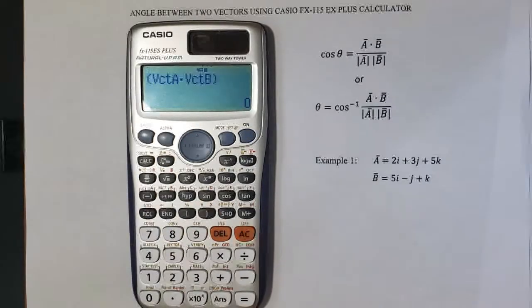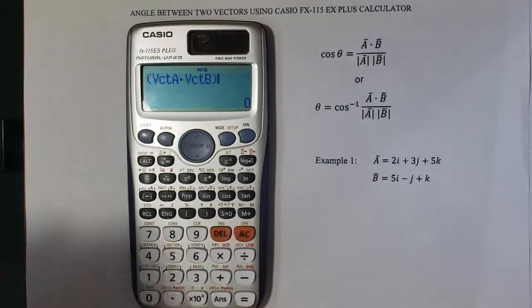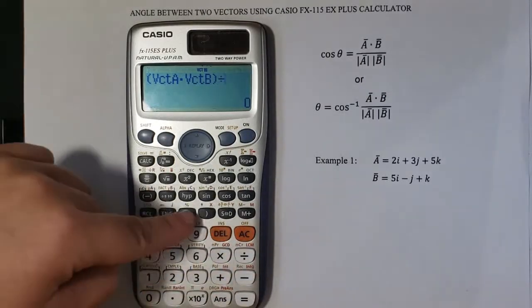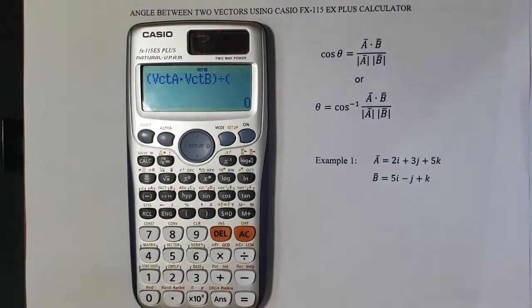Next in our equation is the denominator. I will divide it by the magnitudes of both vectors and their product. And how can I find the magnitude of a vector?